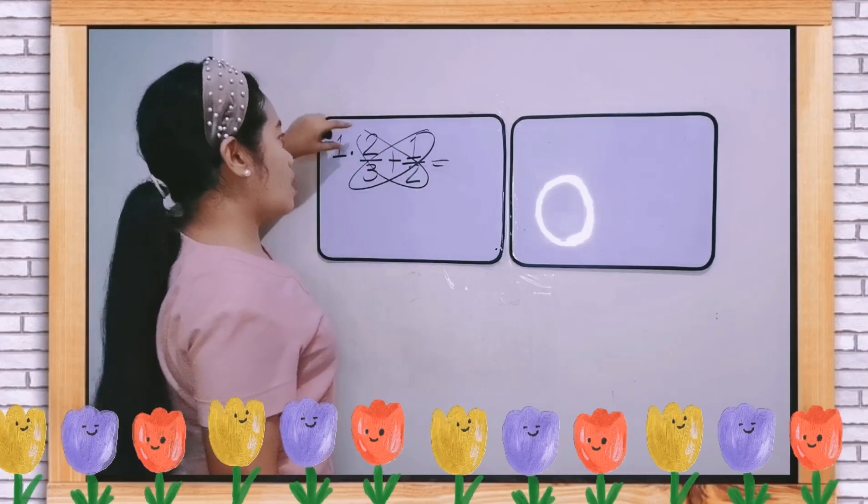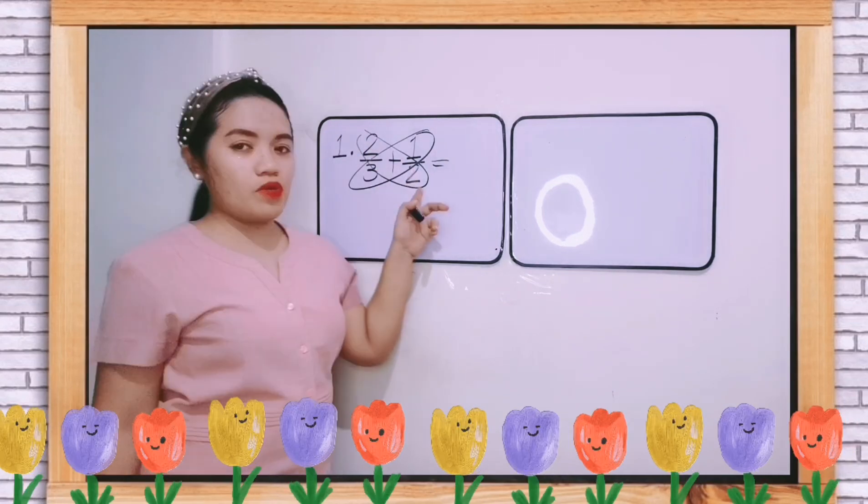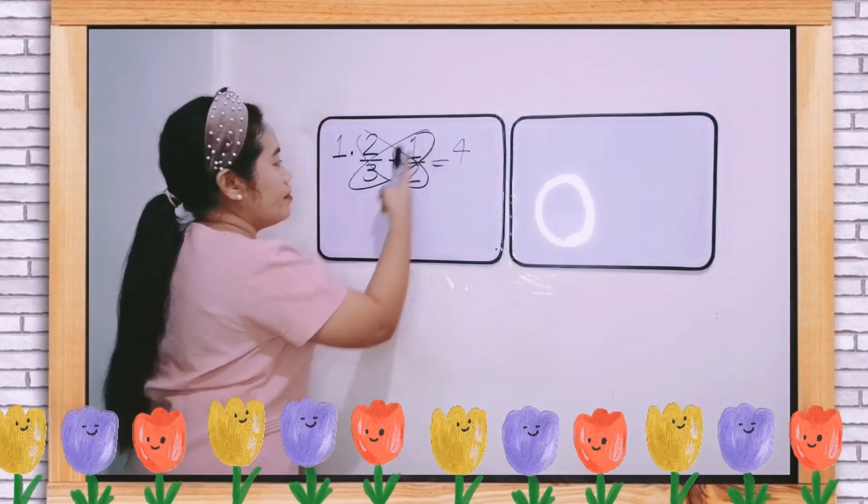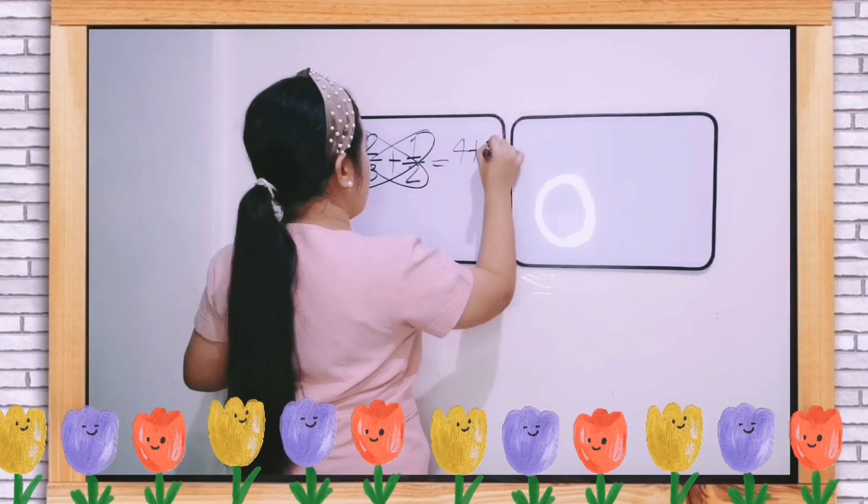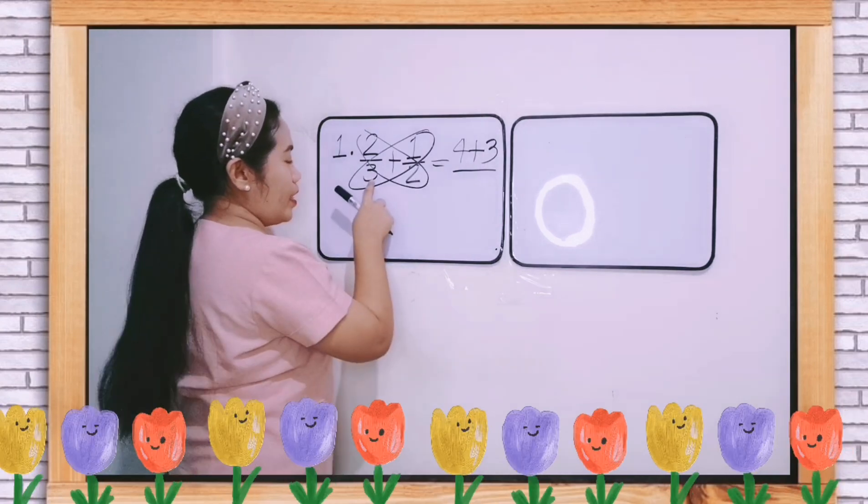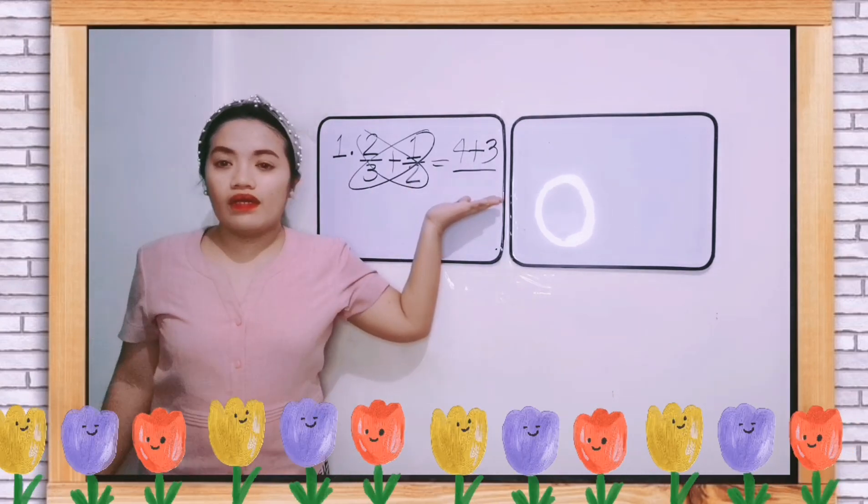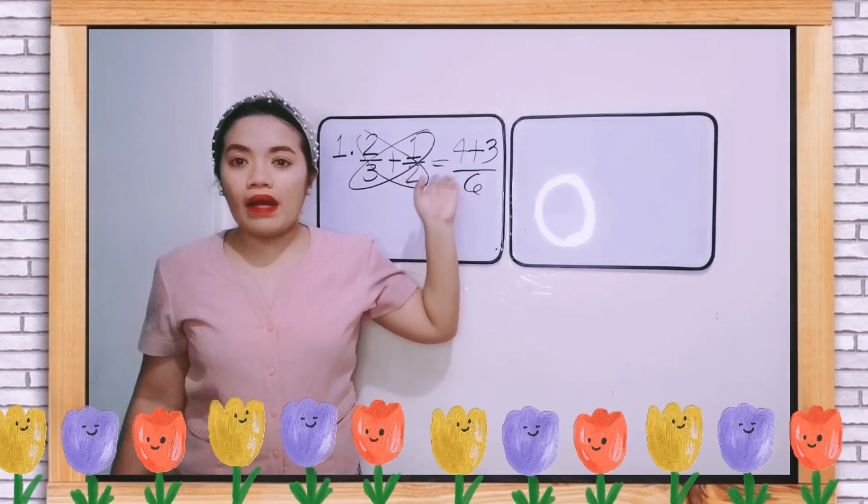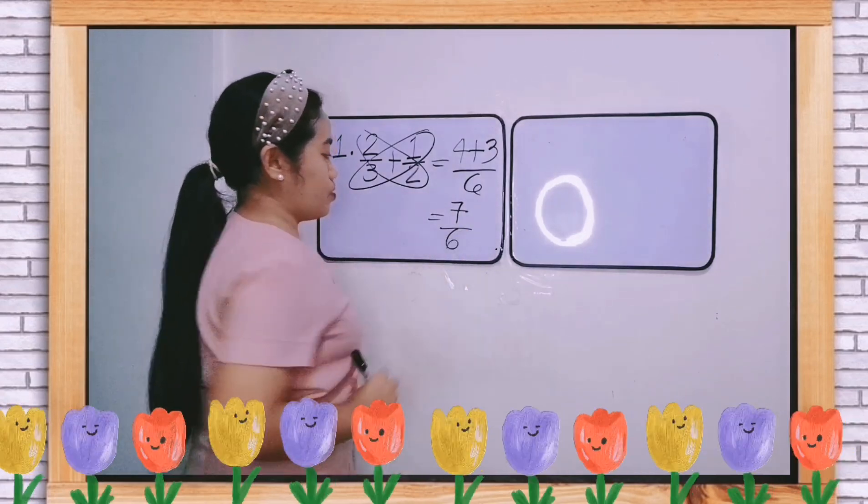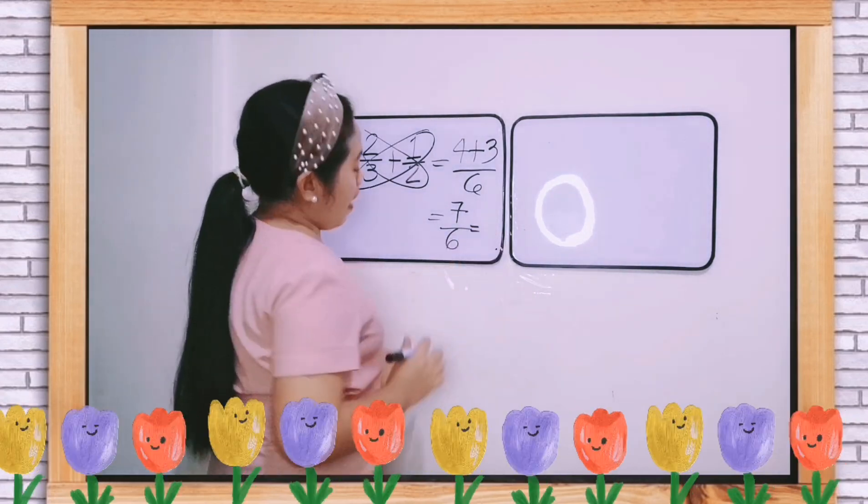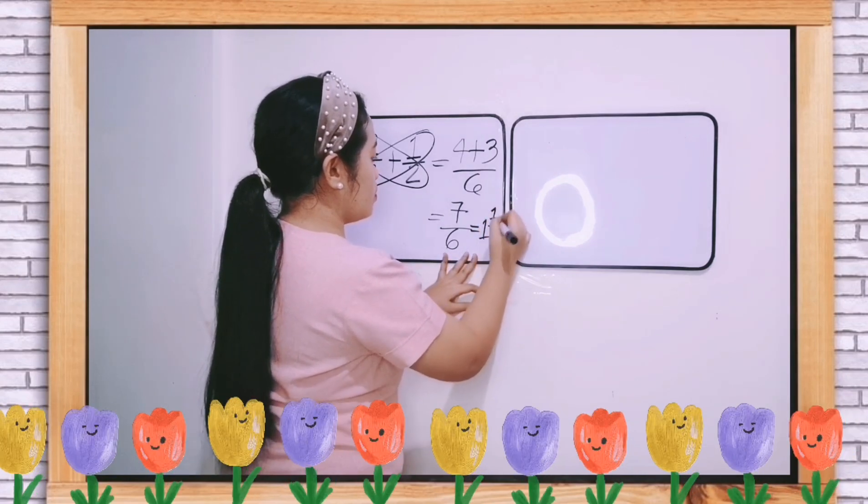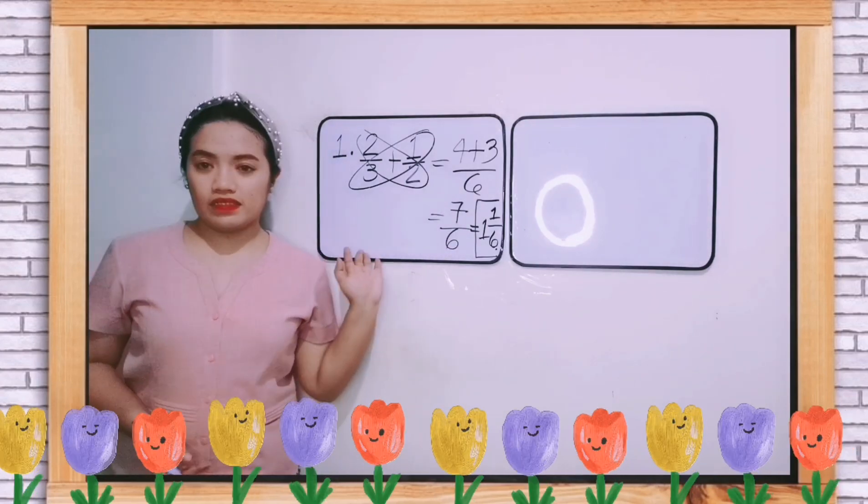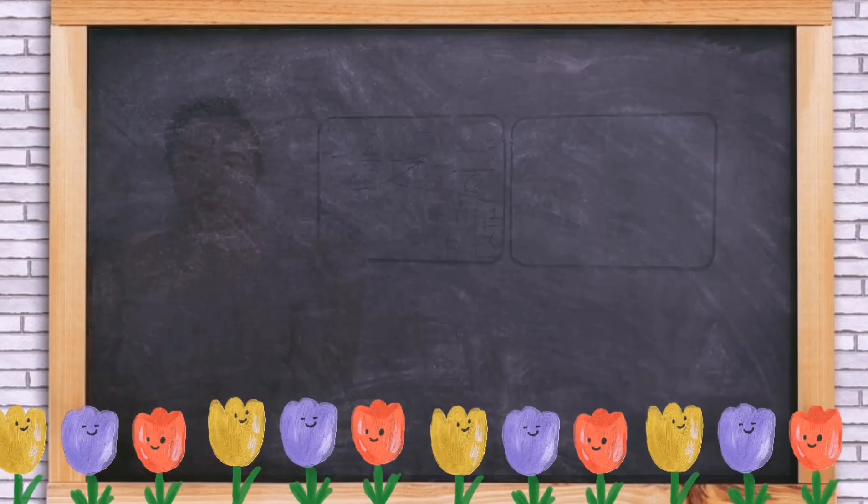Let us use the butterfly method. Just multiply the numerator by the opposite denominator. So 2 times 2 is 4, and that is our first numerator. 1 times 3, that is 3. And multiply the denominators to get the denominator. So 3 times 2 is 6. Let us add 4 plus 3 is 7. Copy the denominator, 6. This will give us 1 and 1 sixth. So here is the other way or the shortcut of how to add dissimilar fractions.